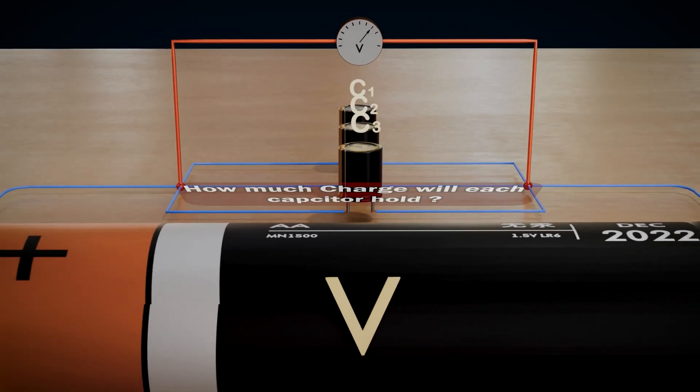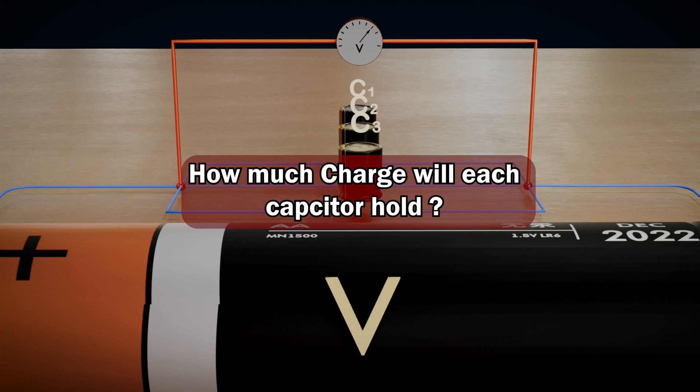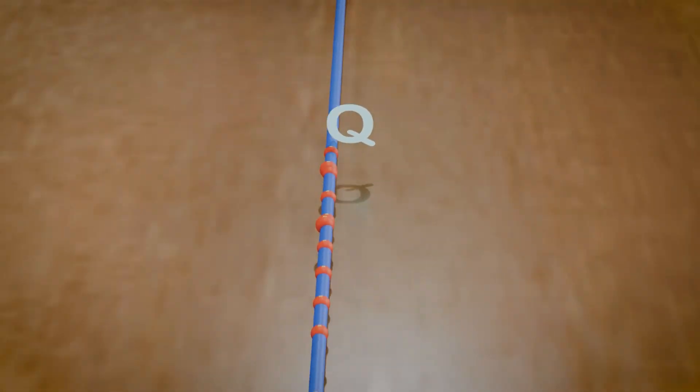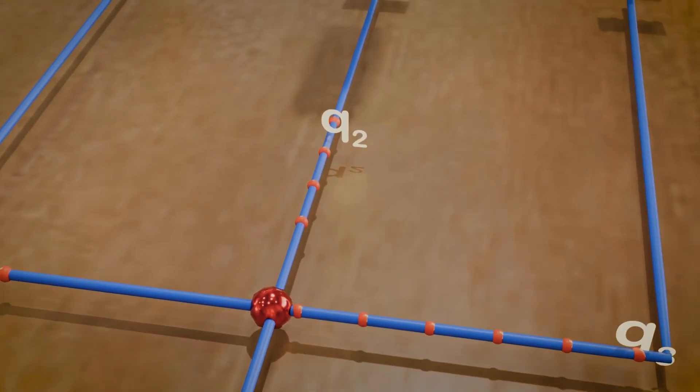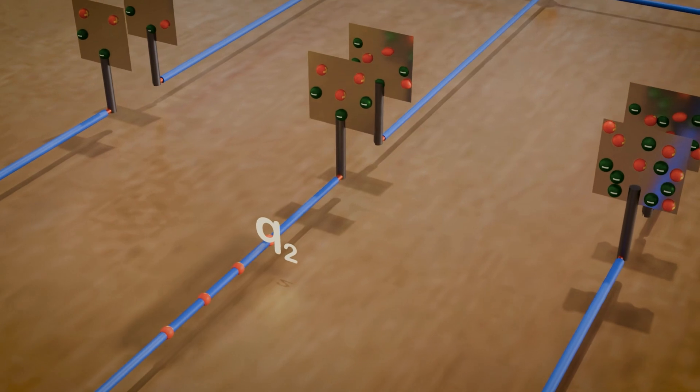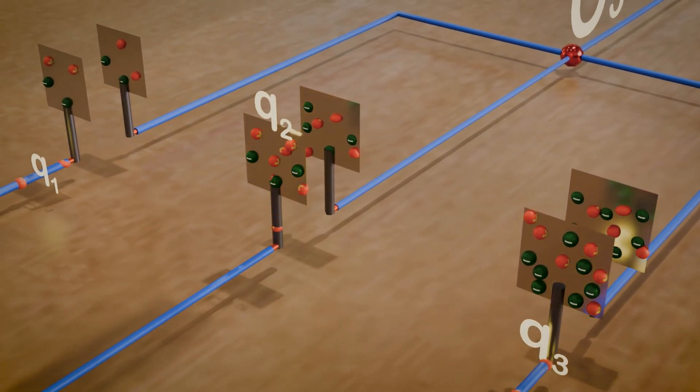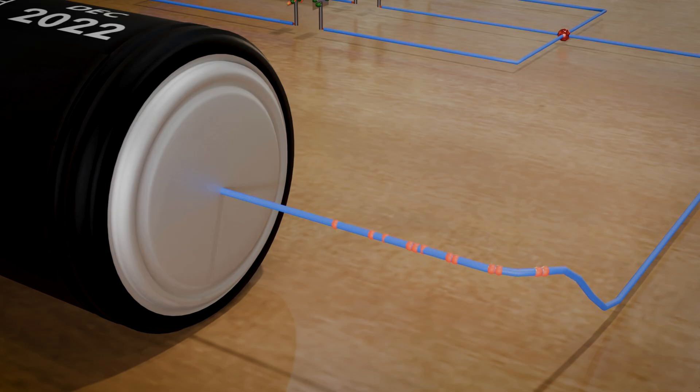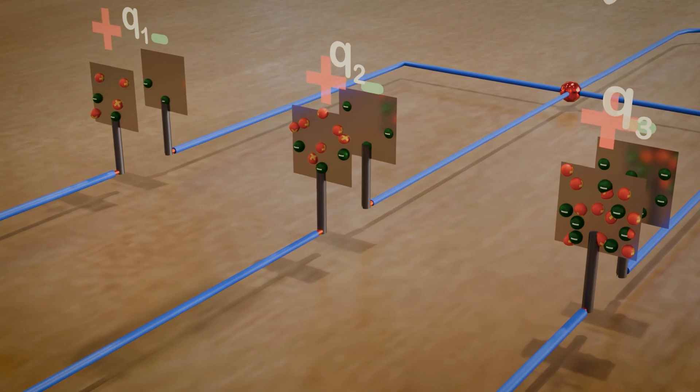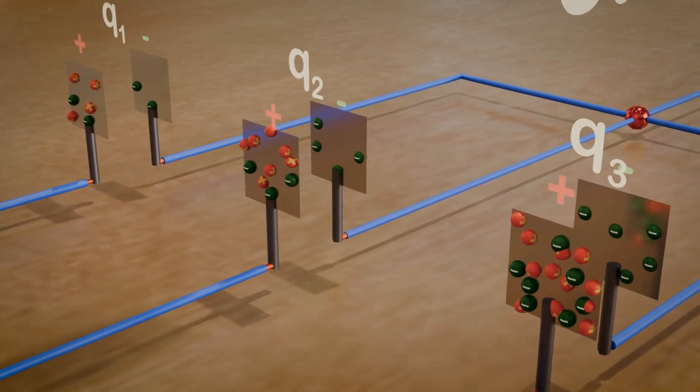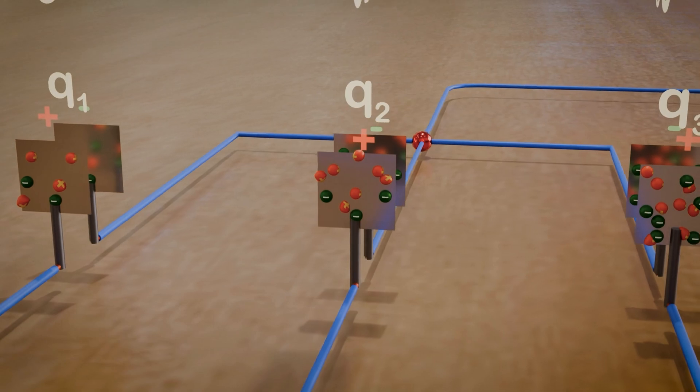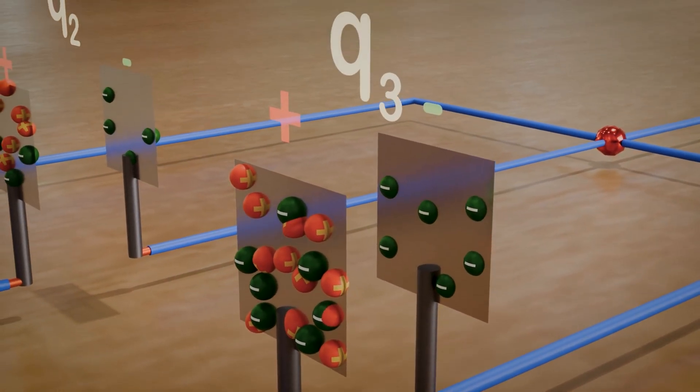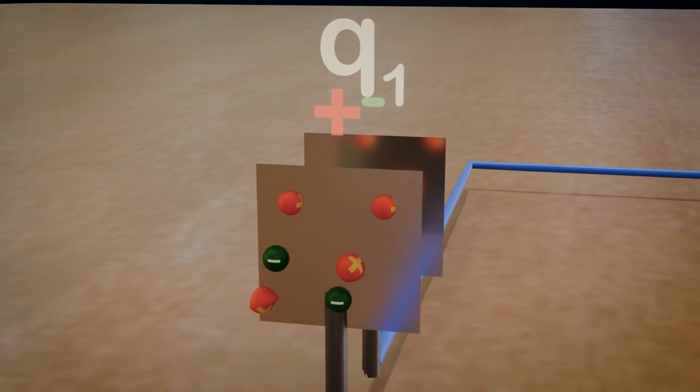But hold on, how much charge will each capacitor hold? Well, that's where things get interesting. When the battery pushes charge into this parallel circuit, the charge doesn't distribute evenly between the capacitors. It's actually based on their capacity to store charge. As the positive charge accumulates on the first plate of each capacitor, the same amount of positive charge is pushed back into the battery from the second plate, like a beautiful balance of give and take happening inside the circuit. The charge each capacitor stores depends on its capacitance. Just imagine, one capacitor might hold a lot of charge easily, while another with lower capacitance will store less charge.